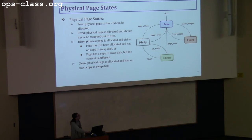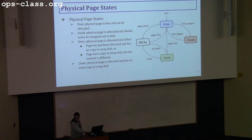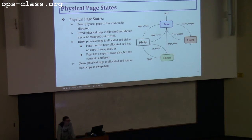For physical page states, I'm going to present the complete picture, but what you only need for OS/161 is the free state, the fixed state, and used — combining dirty and clean into used. The free state means the physical page is not used and is free. The fixed physical page means it is used by the kernel and should not be swapped out — it should remain in memory. With OS/161, what you really need is to mark the physical page as used.